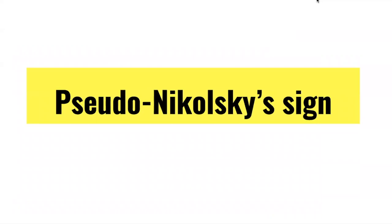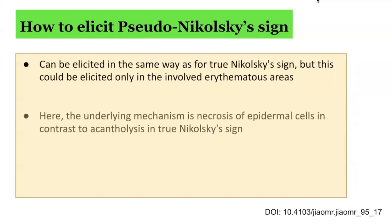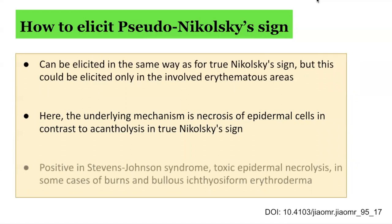Pseudo-Nikolsky sign can be elicited in the same way as for true Nikolsky sign, but it can only be elicited in involved erythematous areas or existing lesional areas. The underlying mechanism here is necrosis of epidermal cells, which is in contrast to acantholysis seen in true Nikolsky sign such as for pemphigus disorders. It is positive in Stevens-Johnson syndrome, toxic epidermal necrolysis, some cases of burns, and bullous ichthyosiform erythroderma.